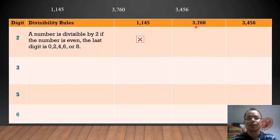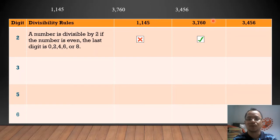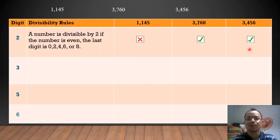Next, in 3,760, the last digit is 0, which is an even number. Therefore, we can say that it is divisible by 2. Next, in 3,456, the last digit is 6 and it is an even number. Therefore, we can say that it is divisible by 2.